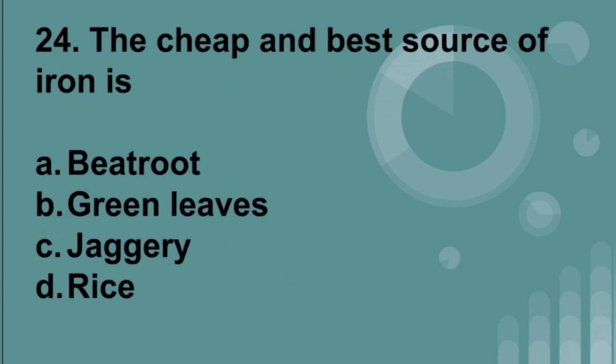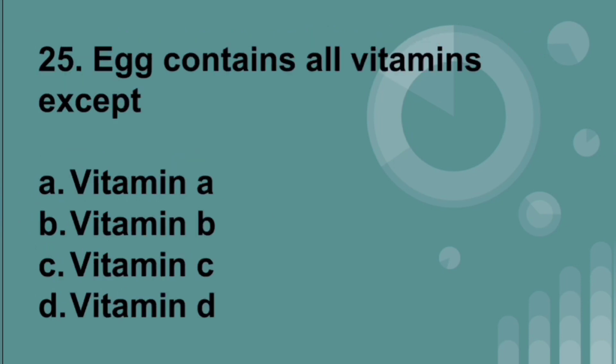The cheapest and best source of iron is green leafy vegetables. Though other options are also sources of iron, green leafy vegetables are the cheapest and best. Egg contains all the vitamins except vitamin C.